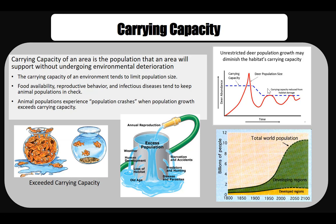An area's carrying capacity is not static — it may be lowered by resource destruction and degradation during an overshoot period, or extended by technological and social changes. An example of dieback occurred in Ireland after a fungus infection destroyed the potato crop in 1845. During this potato famine, approximately 1 million people died and 3 million emigrated to other countries.